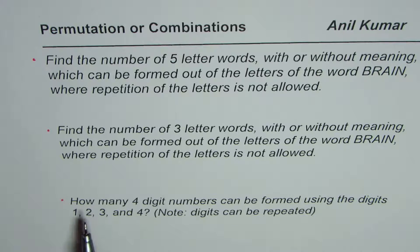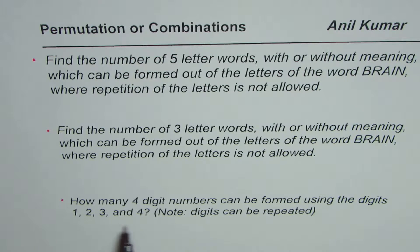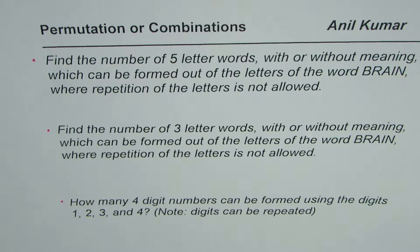The third example says: how many four-digit numbers can be formed using the digits 1, 2, 3, and 4? When you're making numbers, you can repeat the digits. So in example three, we can repeat the digits. These three examples are similar with one difference, and that makes a huge difference in understanding how to apply permutation.